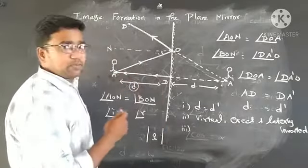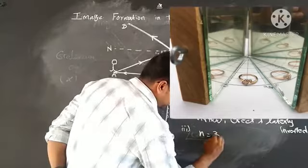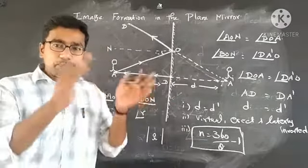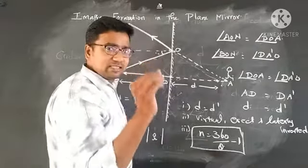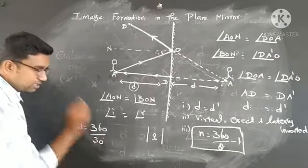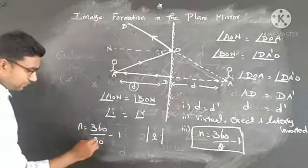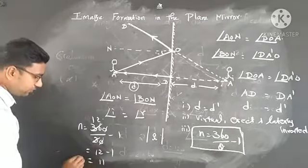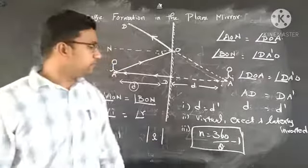If you want to find the number of images formed — whether symmetrically, antisymmetrically, or unsymmetrically — the expression is n equals 360 divided by theta, minus 1. Using this expression, you can easily find how many images are produced when an object is placed between two plane mirrors at an angle theta. For example, if theta equals 30 degrees, then n equals 360 divided by 30, which is 12, minus 1 equals 11. So 11 images will be formed. This is a very important formula.